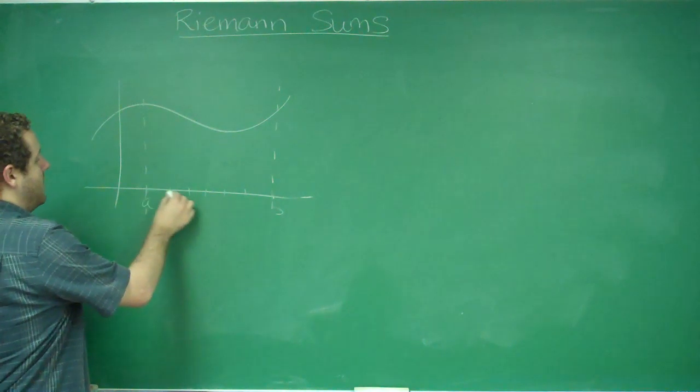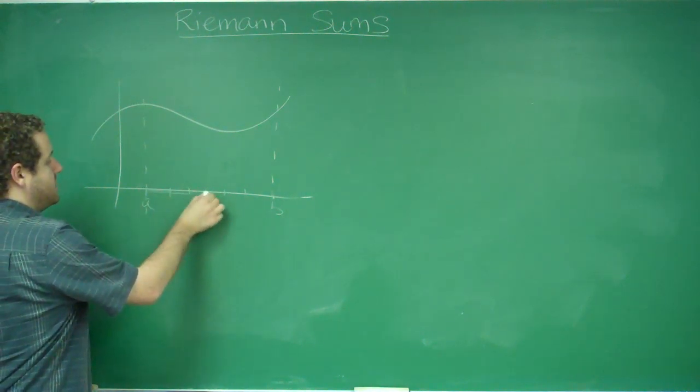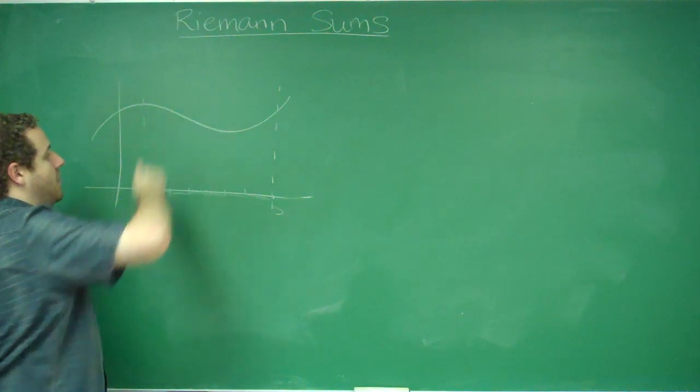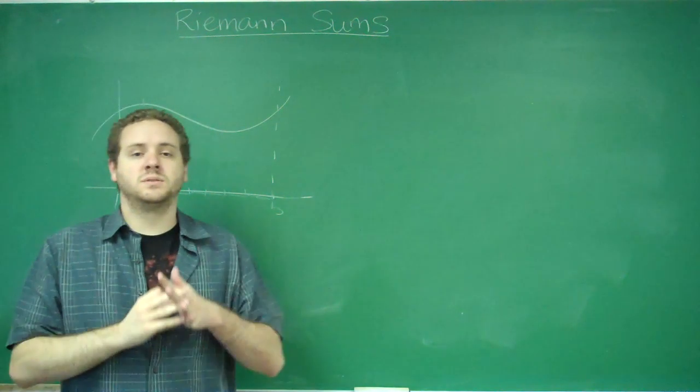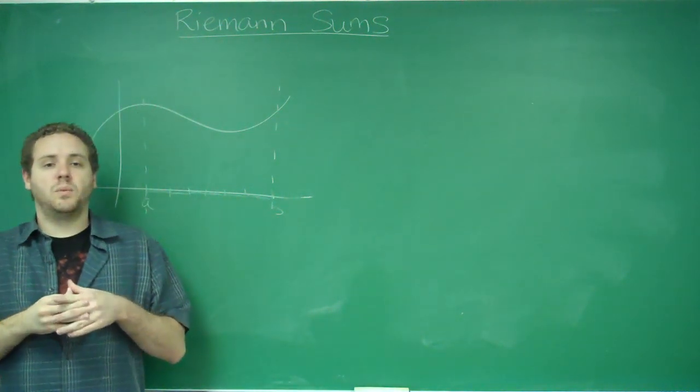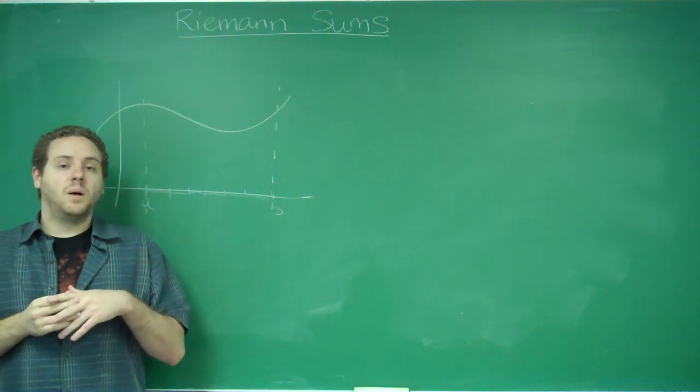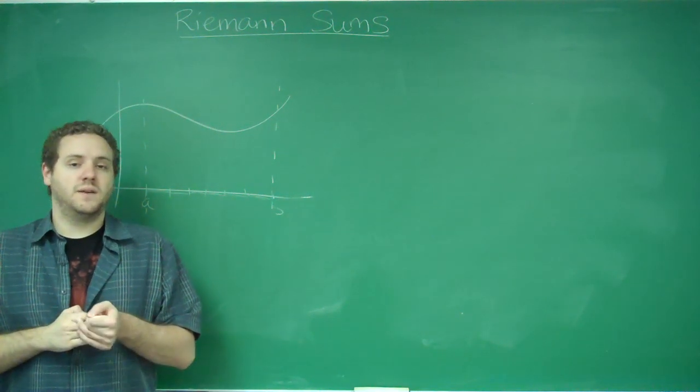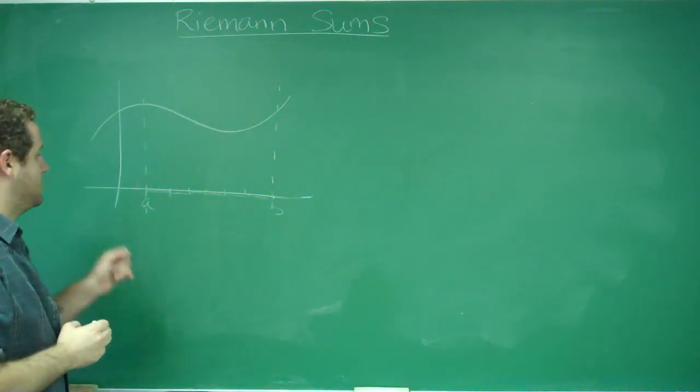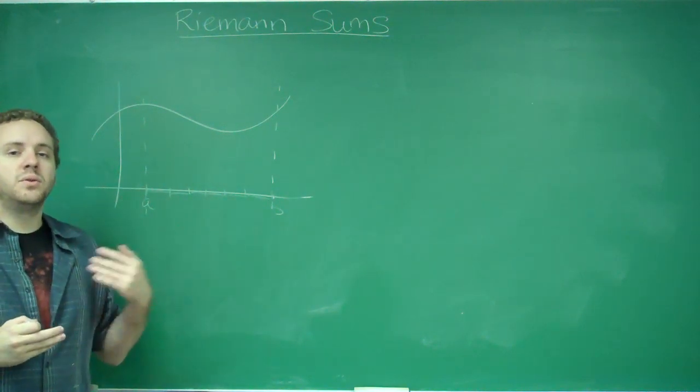So what we do is we have a rectangle here with these widths, and we want to move them up to the function so that they're pretty close. So the thing is, you can do this in a multitude of different ways, but there's three main ways that you're going to have to think about for your class, which is either use the left endpoint, the right endpoint, or the midpoint.